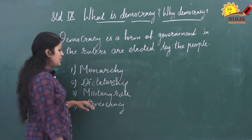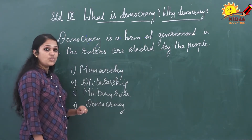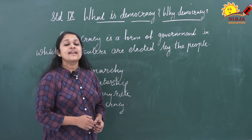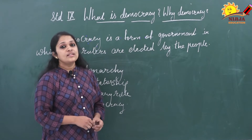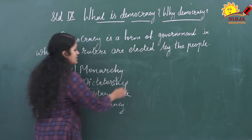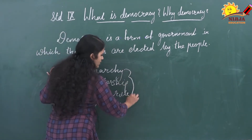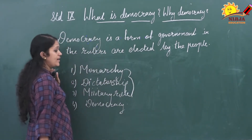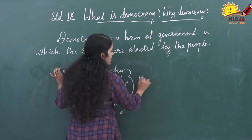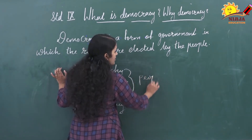Military rule means here the military officers of the country can rule the citizens. So in these three forms of government there is no role of the people.